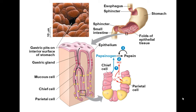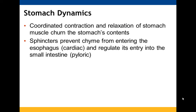The parietal cells are the source of the hydrogen and chloride ions. The chief cells give you the enzyme pepsin via pepsinogen, which helps break down polypeptides. There are also lots of folds to help increase the surface area. The stomach is constantly moving, coordinating contractions and relaxations — like a washing machine — to help mix things up and break down food.